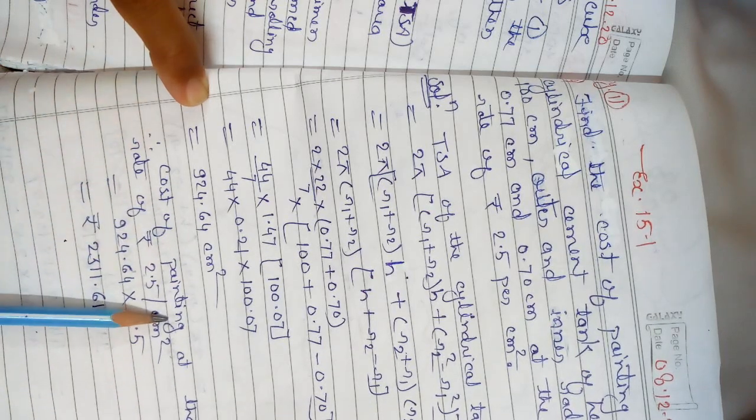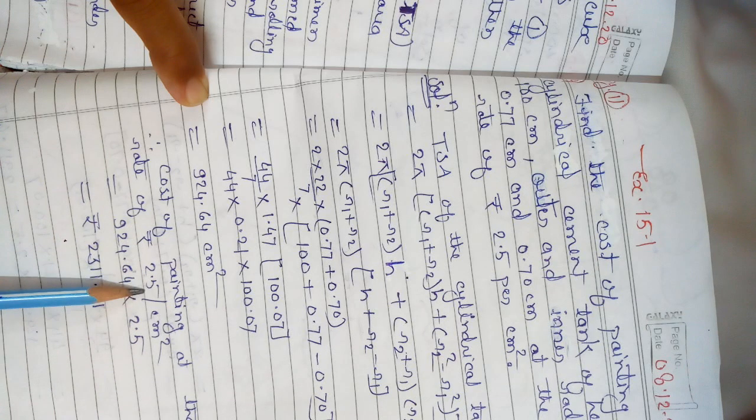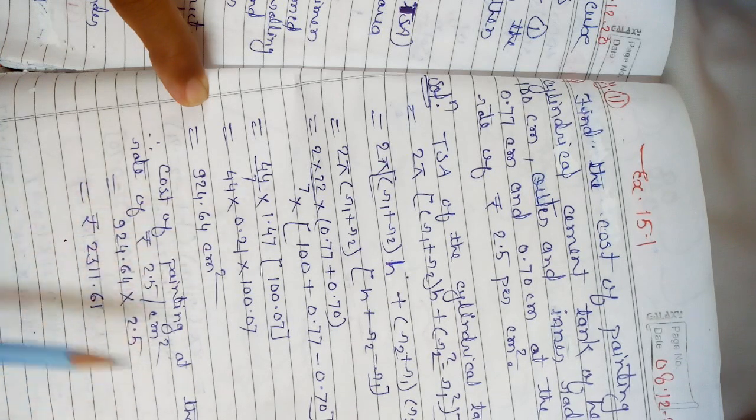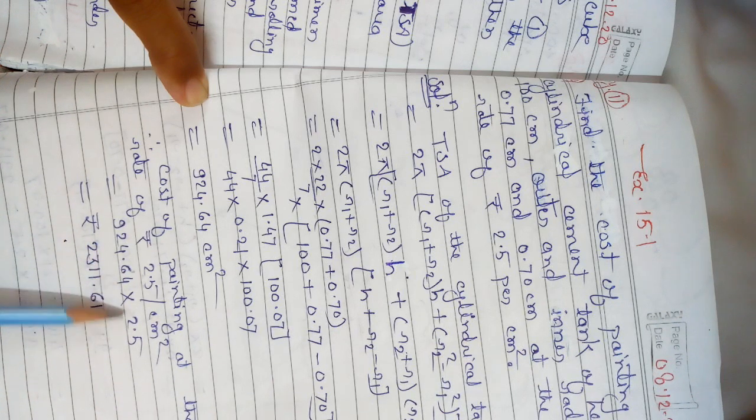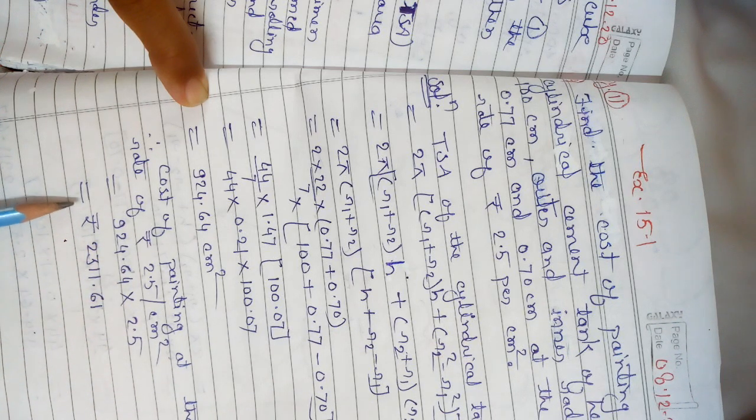Therefore, cost of painting at the rate of Rs 2.5 per square cm gives us 924.64 × 2.5 = Rs 2311.61.